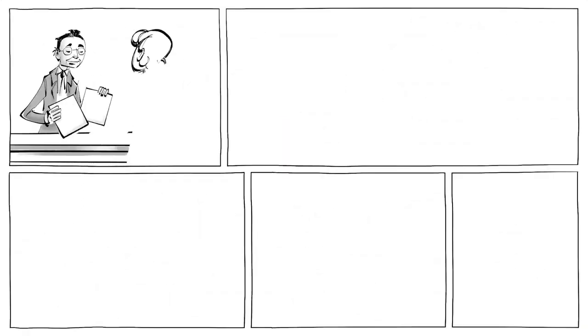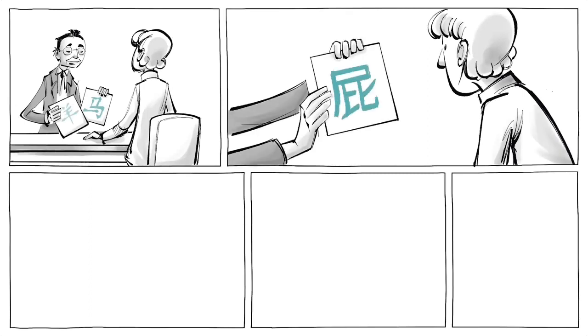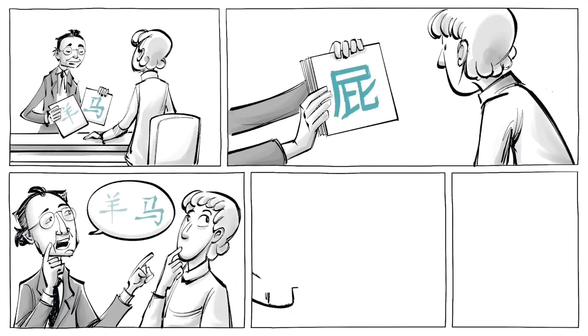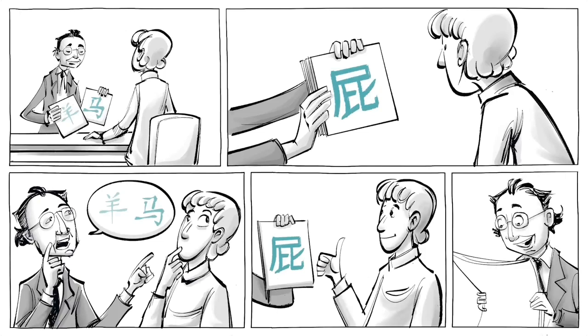Zajonc then tested how subjects responded to specific symbols, such as Chinese ideograms. Subjects were shown various characters a different number of times and were then asked which ones they liked. Those who were shown certain symbols the most also rated them as most favorable. But Zajonc found something even more spectacular.